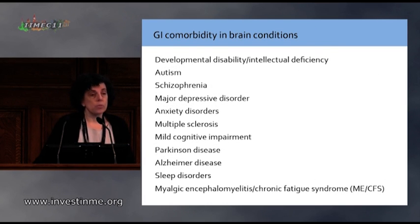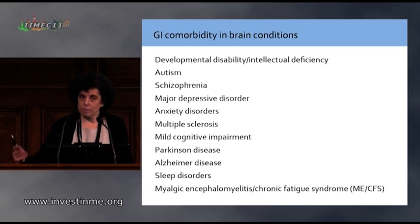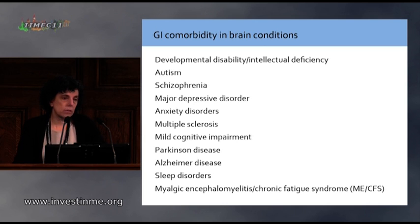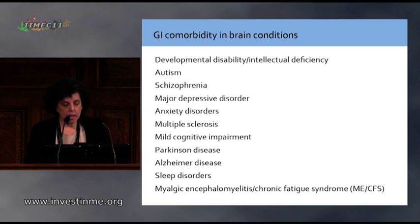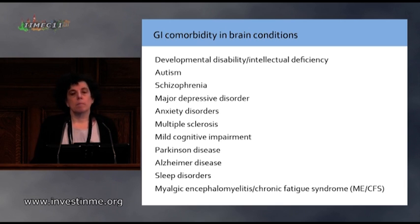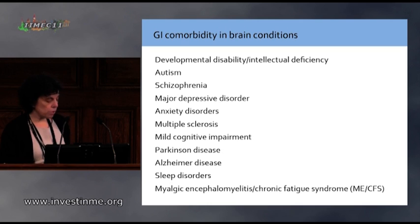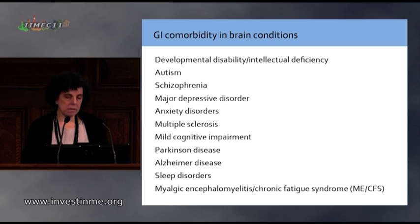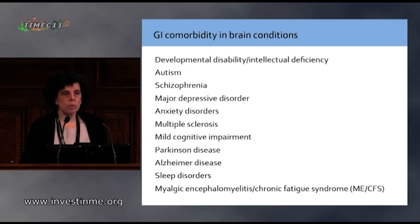There's been increasing focus, as you've heard from prior speakers, on the microbiome and gastrointestinal types of bacteria. Gastrointestinal comorbidity is very common in many brain conditions. It may represent only a subset of individuals with ME, but certainly a subset of ME patients have irritable bowel syndrome or other manifestations of gastrointestinal dysfunction.